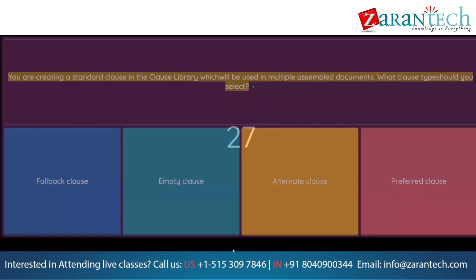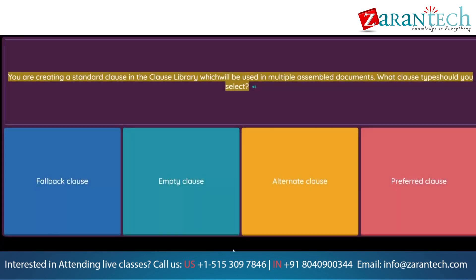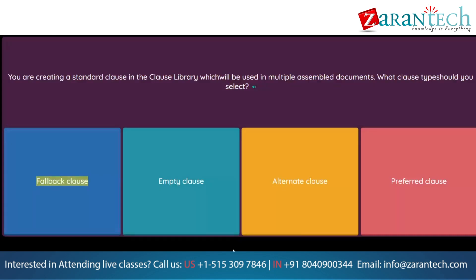Question: You are creating a standard clause in the clause library which will be used in multiple assembled documents. What clause type should you select? Option 1: Fallback clause. Option 2: Empty clause. Option 3: Alternate clause. Option 4: Preferred clause.